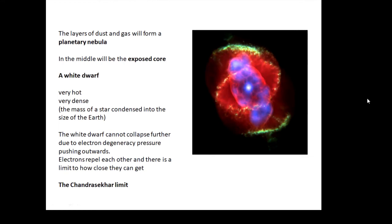And we will be left with a planetary nebula. Okay, so this cloud of dust and gas, and in the middle there will be the exposed core, the core all by itself. And that is called a white dwarf.